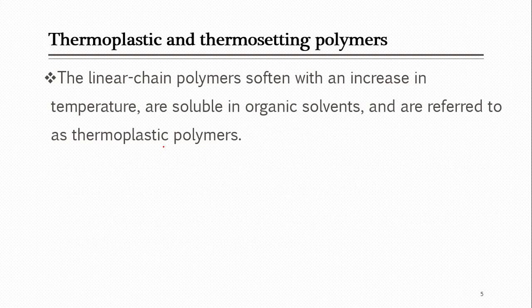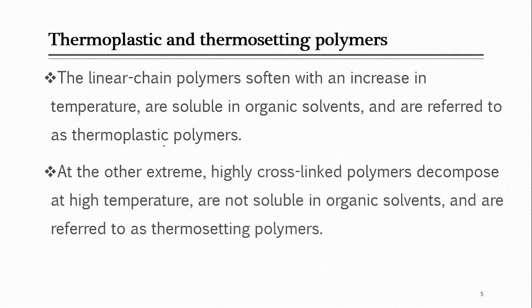When you look at the classification of these polymers, they are classified into thermoplastic and thermosetting polymers. Thermoplastic polymers are those which can be softened with temperature — you can increase their temperature, melt them, break them into their monomers, and they can be reused. Thermosetting polymers cannot be melted; when you increase their temperature they will decompose and can't be used again.